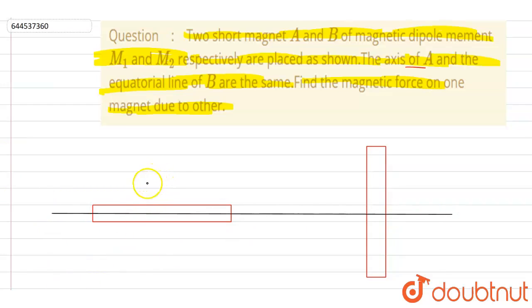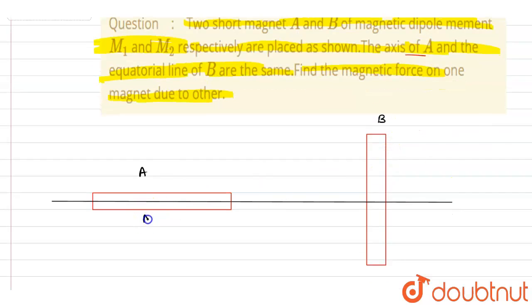So if you see here, the axis of A is this and equatorial line of B, and this is M1, M2.